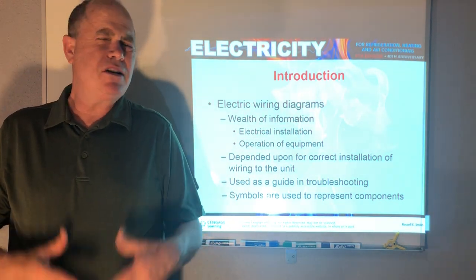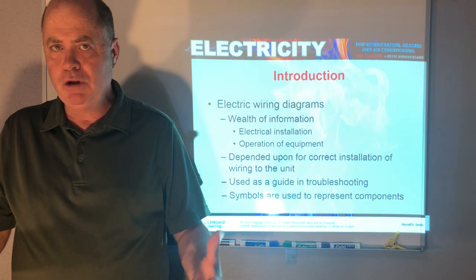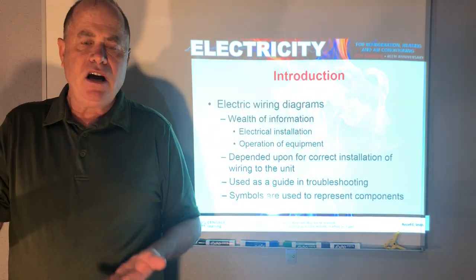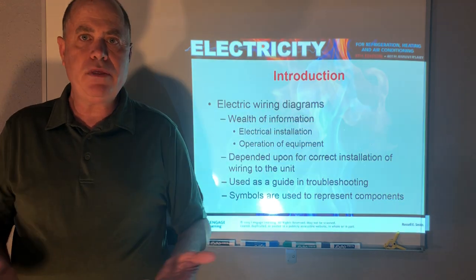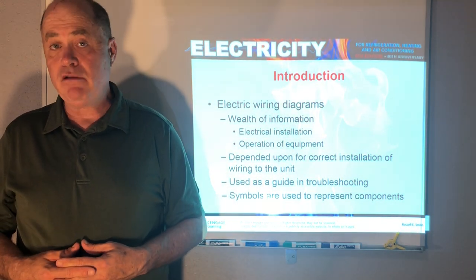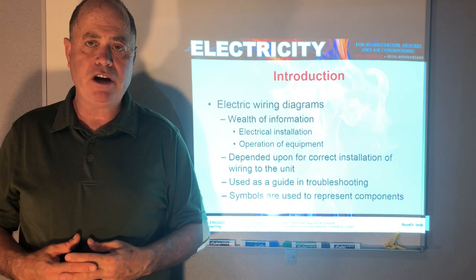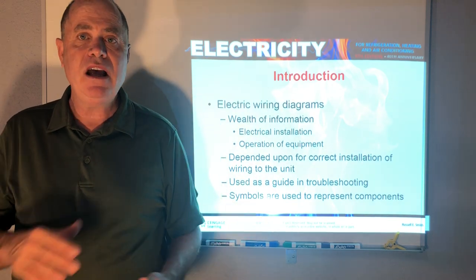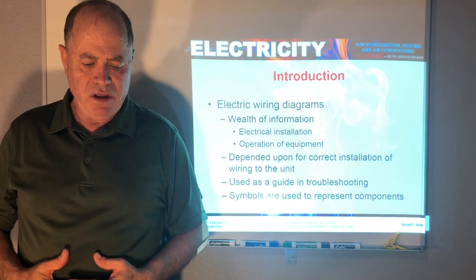Electrical wiring diagram is kind of like a blueprint. When you have a blueprint you have different symbols on the blueprint. It directs you as to where things are and that's kind of how an electrical diagram is. We have different electrical diagrams to help you see where different electrical components are located and how they interact with each other.